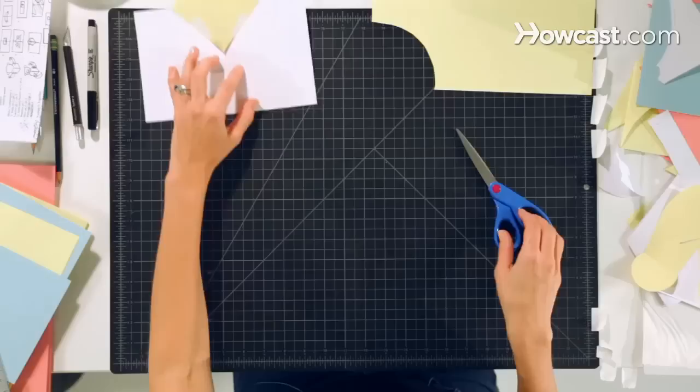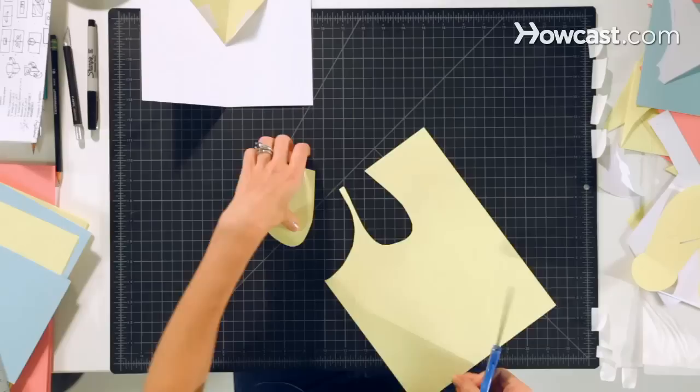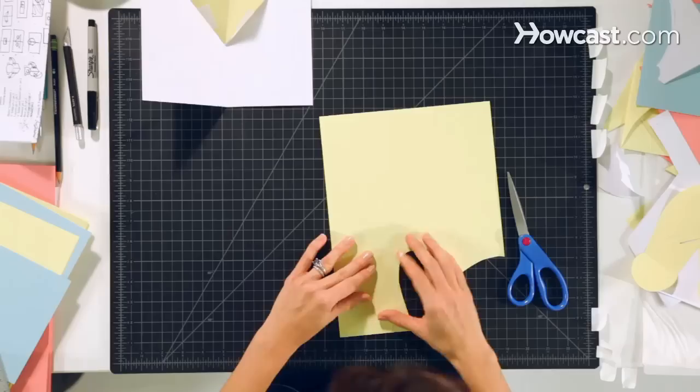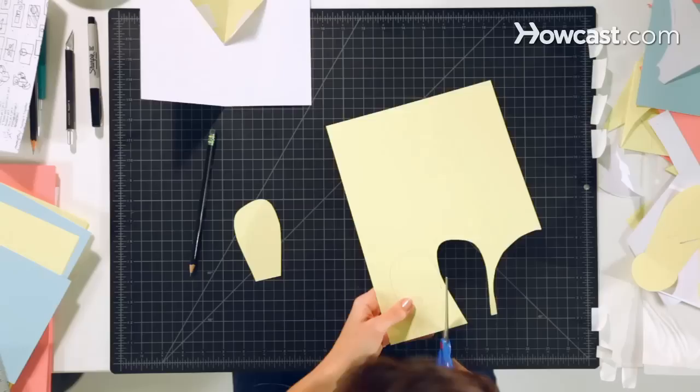Next, take that yellow piece of cardstock and cut out a wing shape. And then flap it over and actually trace out another wing shape. And cut that out as well.